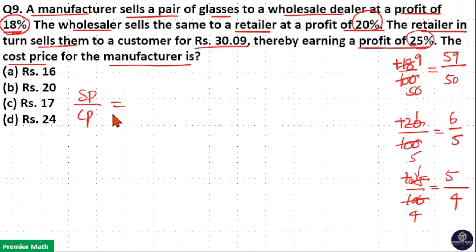Now take the ratio of sell price by cost price, which is equal to multiply all these together: 59 by 50 into 6 by 5 into 5 by 4.